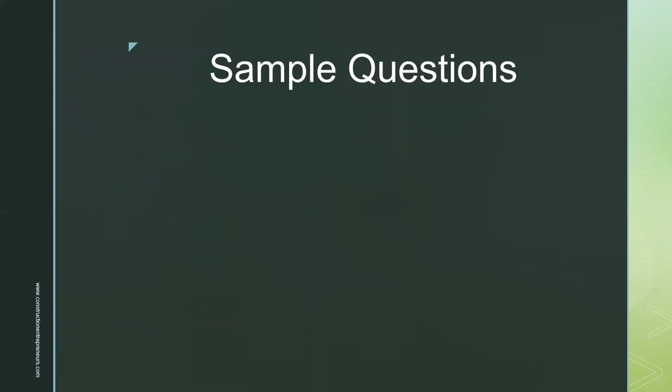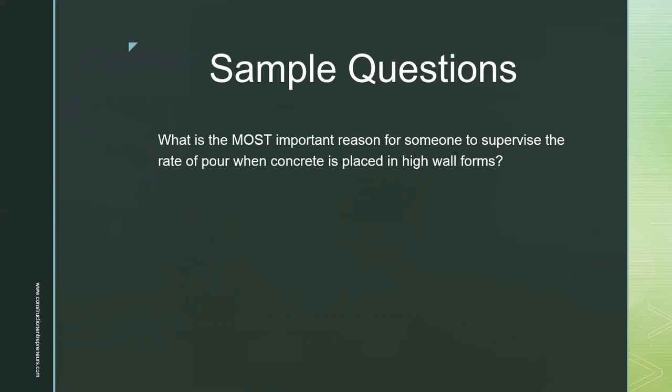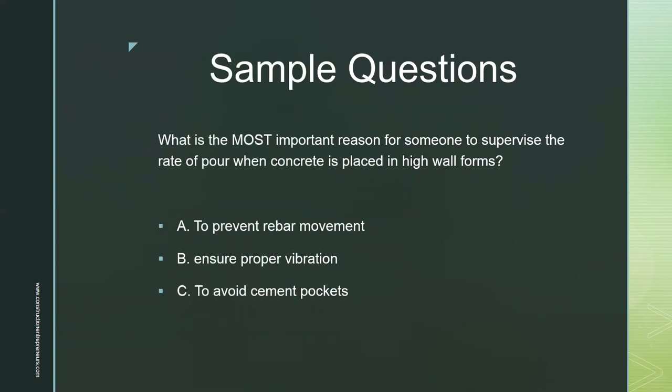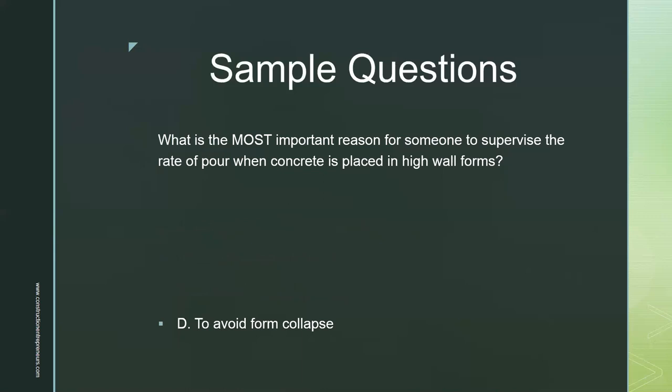Next sample question: What is the most important reason for someone to supervise the rate of pour when concrete is placed in high wall forms? A — to prevent rebar movement. B — ensure proper vibration. C — to avoid cement pockets. D — to avoid form collapse. The answer is D, to avoid form collapse.